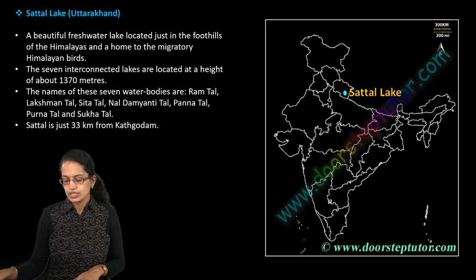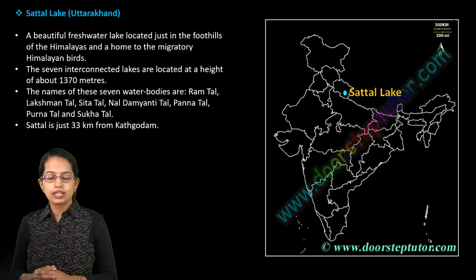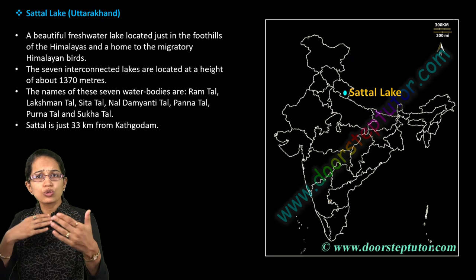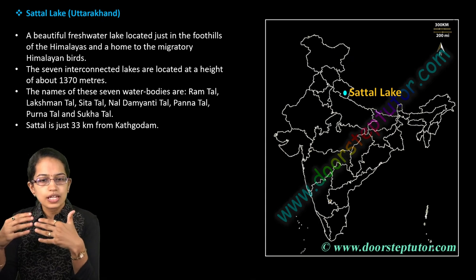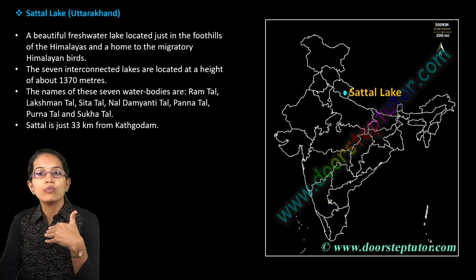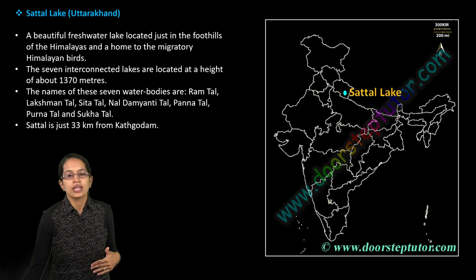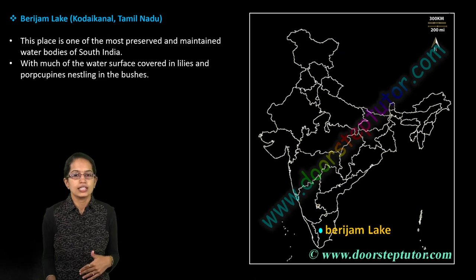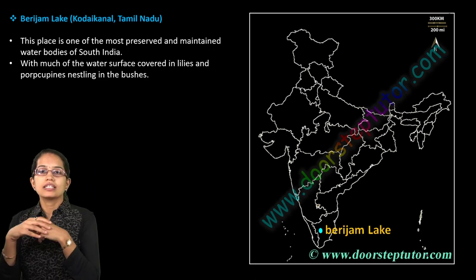Sattal — 'sat' meaning seven — has seven interconnected lakes located in the Uttarakhand area. It is close to Kathgodam and is also home to numerous migratory birds, making it a very important location.